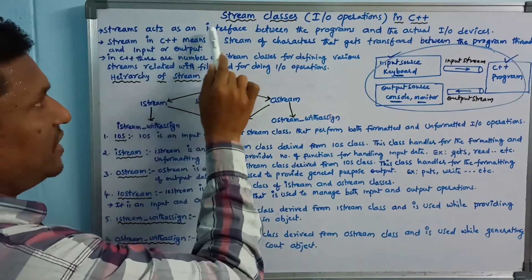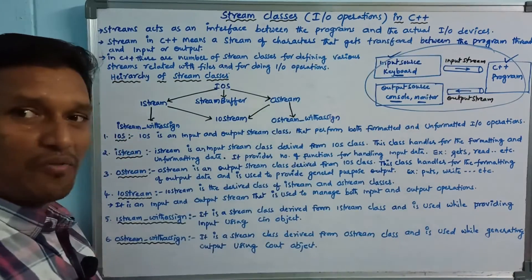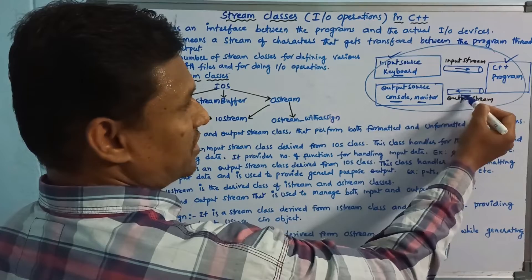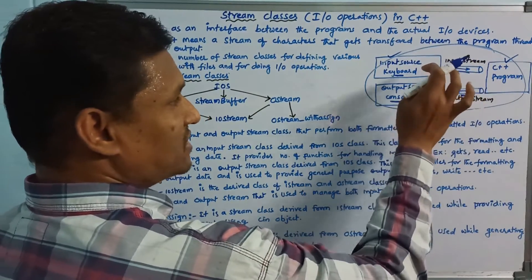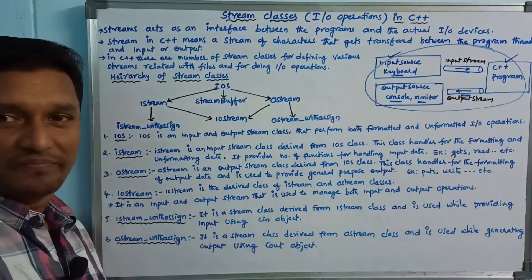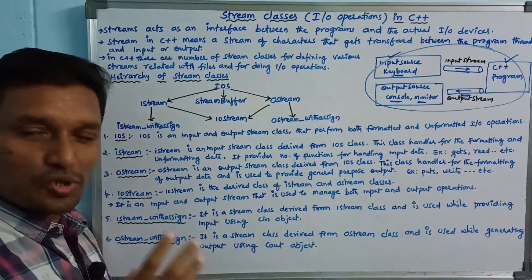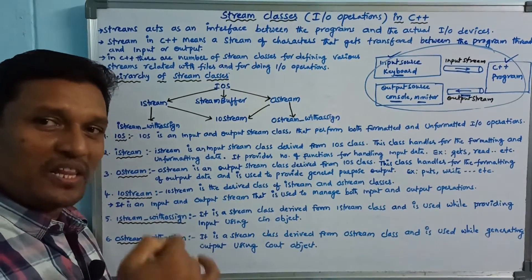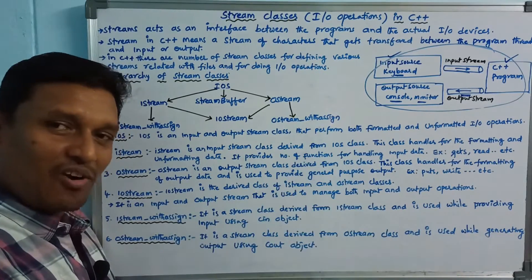Streams act as an interface between the program and the actual I/O devices. The program, input devices, and output devices use streams as an interface and as a mediator. Stream acts as the intermediary between input, the program, and output.